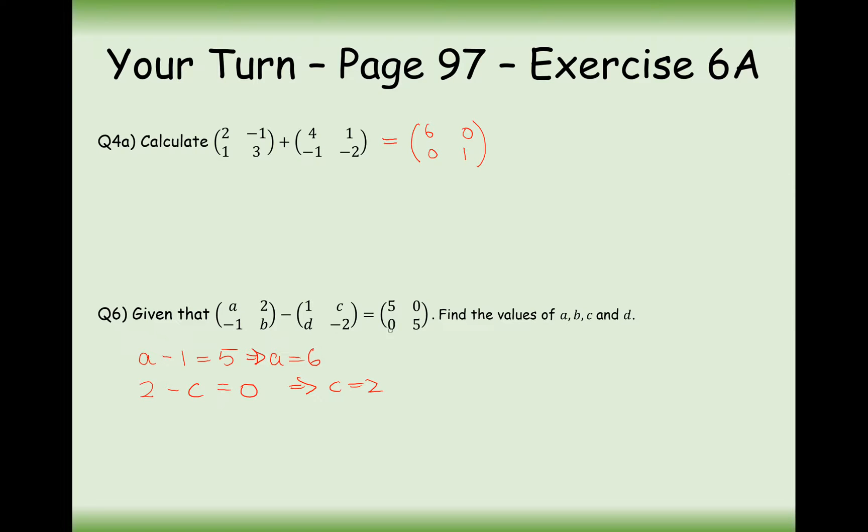Looking at the bottom left-hand cells now, minus 1 minus D equals 0. So D must therefore equal minus 1. And looking at the bottom right-hand cells in each of these matrices, B minus minus 2 equals 5. So this is effectively saying B plus 2 equals 5. So therefore, B is equal to 3.